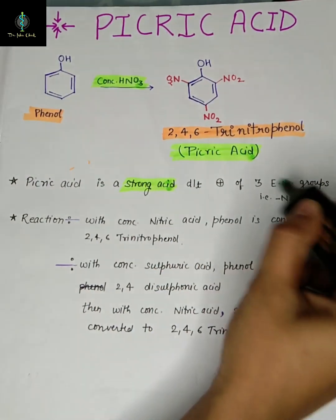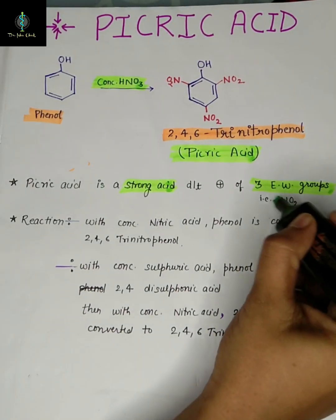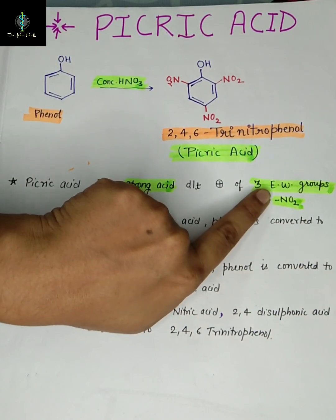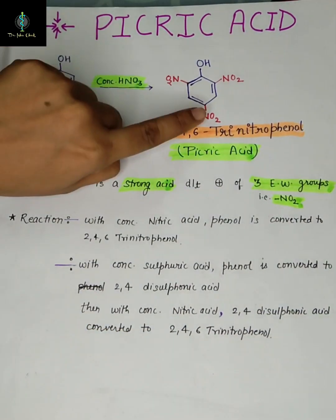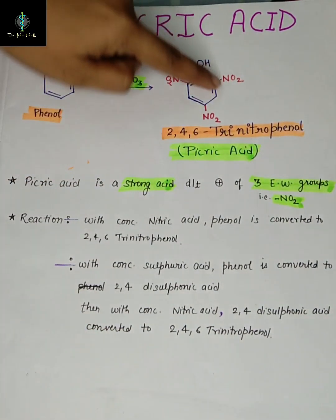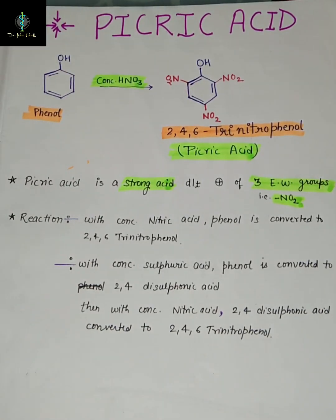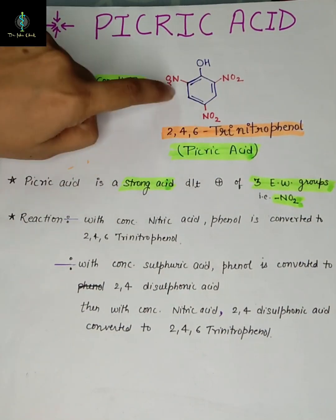What are electron withdrawing groups? Electron withdrawing groups are those groups which, when attached to the ring, attract electrons towards themselves. So when these get attached to this ring, it will become a strong acid.